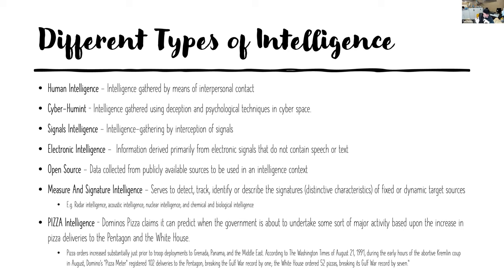Pizza intelligence relates to observations in the US where companies like Domino's could predict when governments were about to make certain decisions because they'd order a lot of pizzas. You can bring that into your own world, seeing how behaviours happen. People can follow predictable patterns from that perspective.